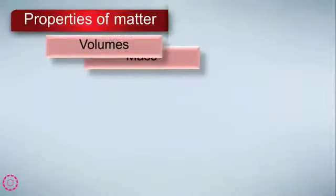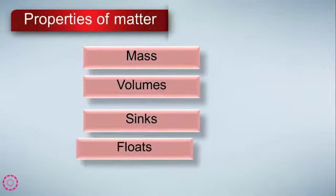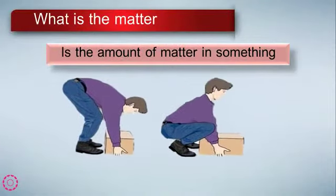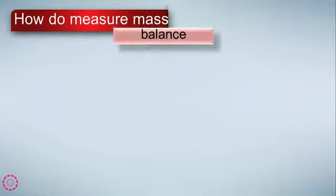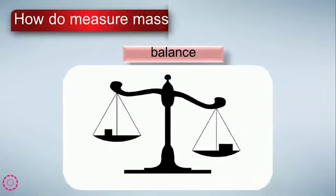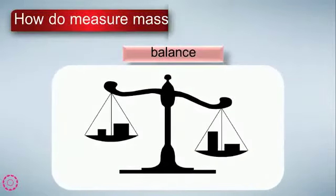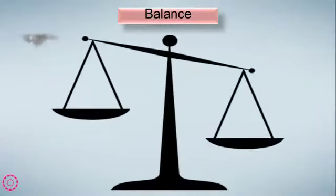Properties of matter: mass, volume, sink, float. What is mass? Mass is the amount of matter in something. How do we measure mass? We use a balance. We use a balance to weigh.